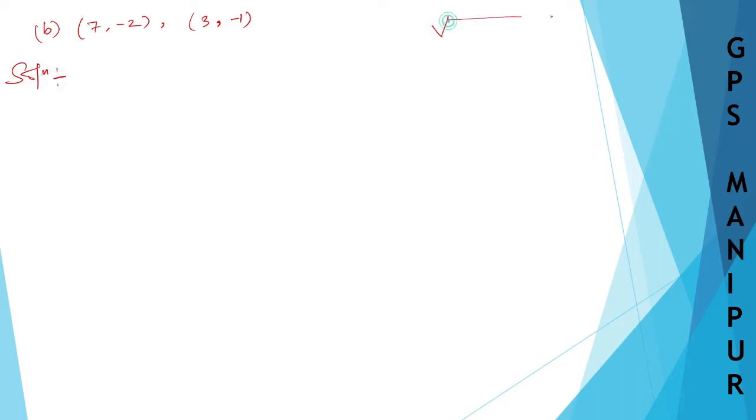Let me write down the formula here. Formula is x2 minus x1, x1 minus x2, sorry. Same thing. Let me write down the formula properly. So it is (x1 minus x2) whole square plus (y1 minus y2) whole square. This is the formula.